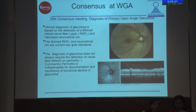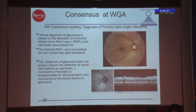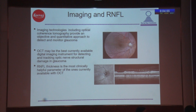The clinical diagnosis of glaucoma is based on the detection of a thin retinal nerve fiber layer and a narrowed neuroretinal rim — the current-day gold standards. The diagnosis of glaucoma does not always require detection of visual field defects, which is what we were discussing regarding pre-perimetric glaucoma. But perimetry is indispensable for documentation and monitoring of functional decline. Imaging technologies including OCT provide an objective and quantitative approach. Of all the technologies, OCT has stood the test of time and is definitely the best currently available digital imaging instrument for structural damage in glaucoma. RNFL thickness is the most clinically helpful parameter available with OCT.